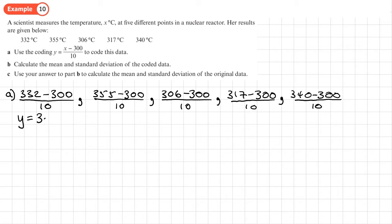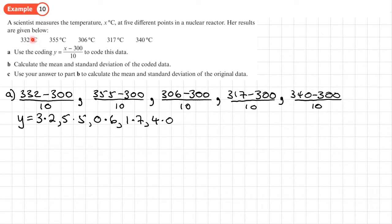That gives us these coded y values: 3.2, 5.5, 0.6, 1.7, and 4.0. These numbers are much smaller than the original values, so calculations should be easier.